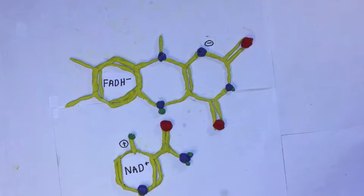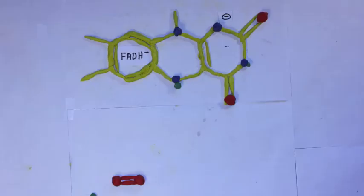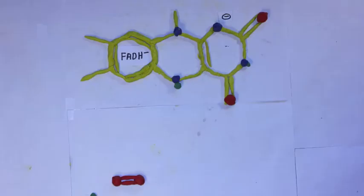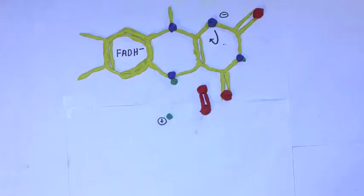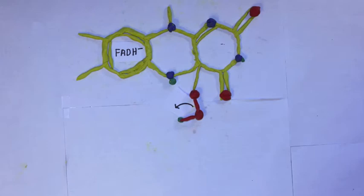The reduced FAD is now ready to accept molecular oxygen, which is then protonated to form a flavin hydroperoxide. During this time, the squalene molecule also moves into the active site of the enzyme. The flavin hydroperoxide functions like a peroxy acid to epoxidize the nearby double bond, culminating in the formation of 2,3-oxidosqualene.